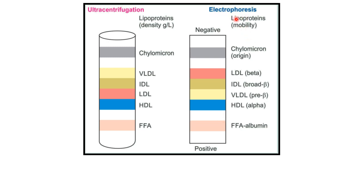The mobility of lipoproteins in electrophoresis is based on protein content — higher the protein content, higher the mobility. For example, HDL has around 50% protein so it will have higher mobility, while chylomicron has the least protein content so it will remain at the origin.